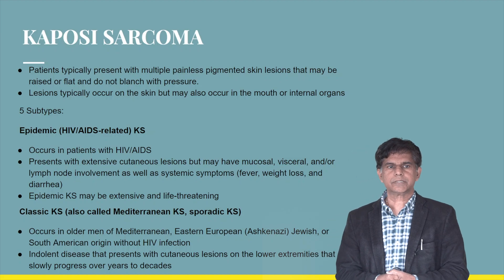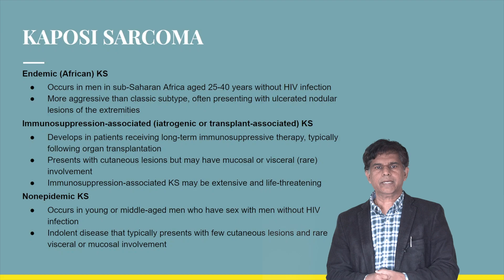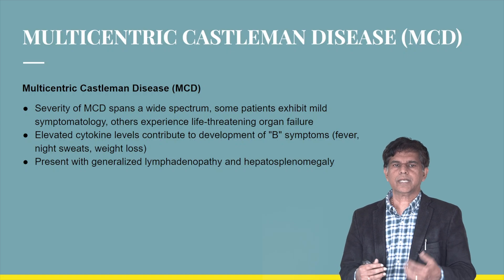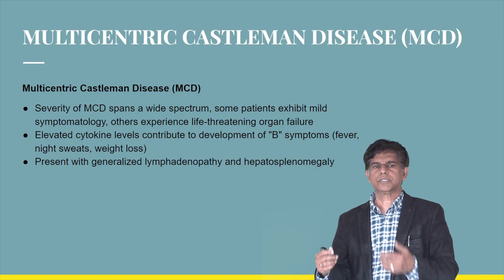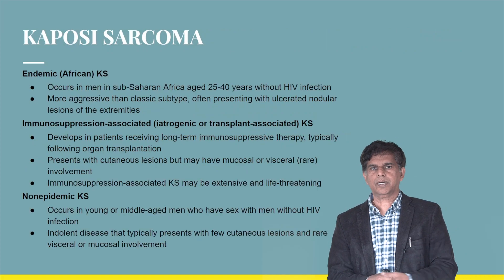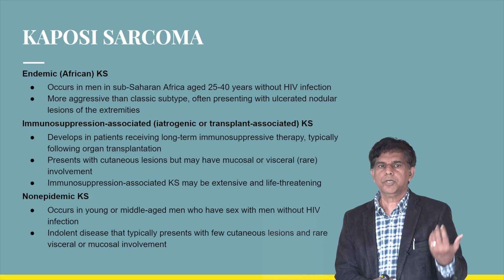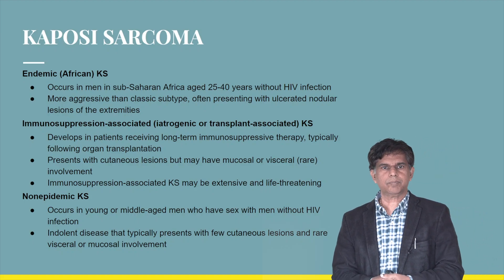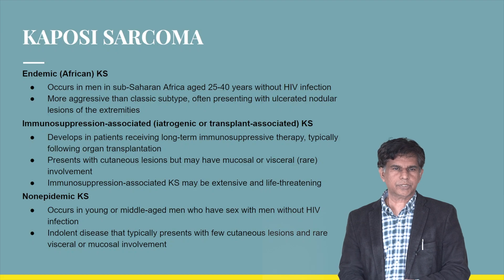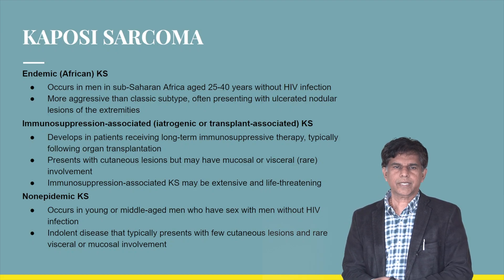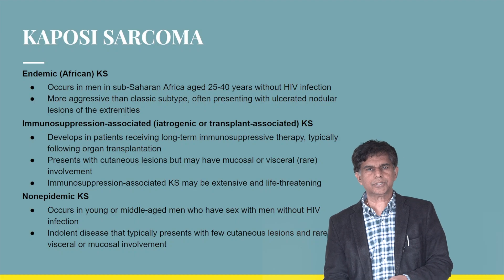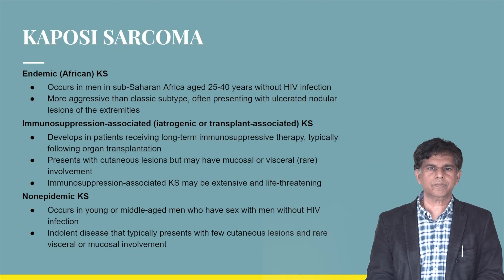Classic Kaposi Sarcoma presents in older men of Mediterranean, Eastern European, or Ashkenazi Jewish, or South American origin without HIV infection — an indolent disease with cutaneous lesions on the lower extremities that slowly progress over years. Endemic Kaposi Sarcoma occurs in men in sub-Saharan Africa. Immunosuppression-associated Kaposi Sarcoma is iatrogenic and transplant-associated, developing in patients on long-term immunosuppressive therapy. Non-epidemic Kaposi Sarcoma occurs in young and middle-aged men who have sex with men without HIV infection.